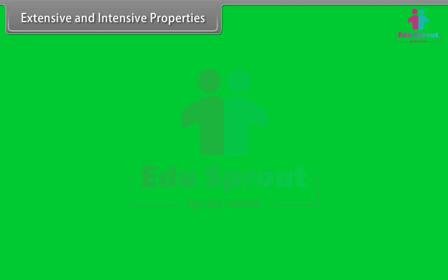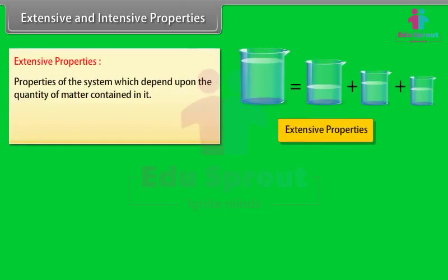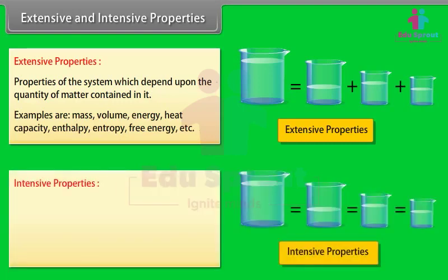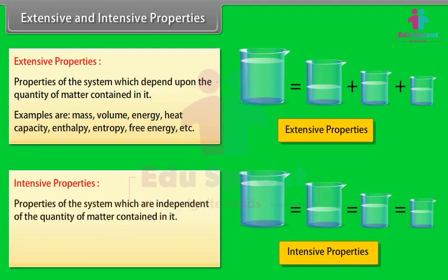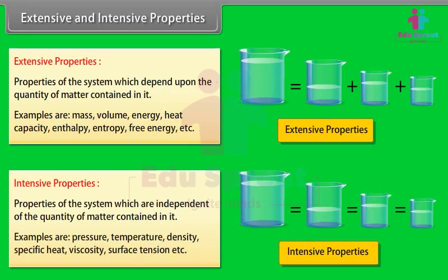Extensive and intensive properties. Extensive properties are properties of the system which depend upon the quantity of matter contained in it. Examples are mass, volume, energy, heat capacity, enthalpy, entropy, and free energy. Intensive properties are properties of the system which are independent of the quantity of matter contained in it. Examples are pressure, temperature, density, specific heat, viscosity, and surface tension.